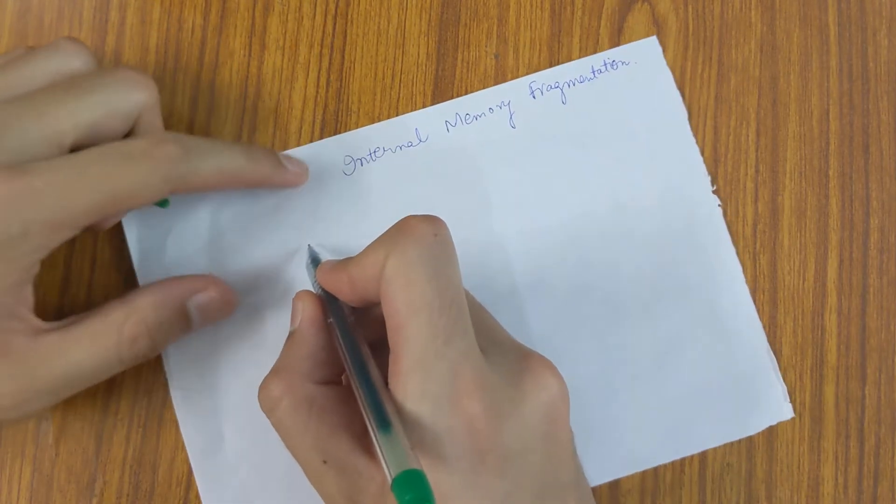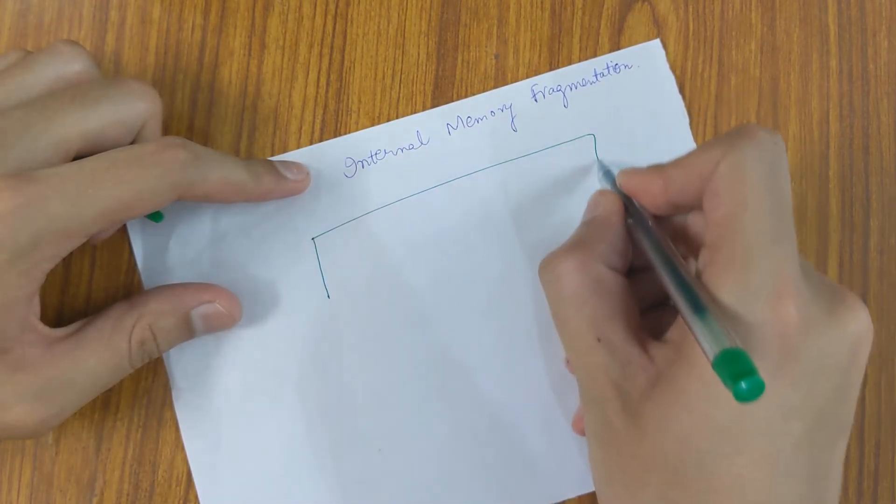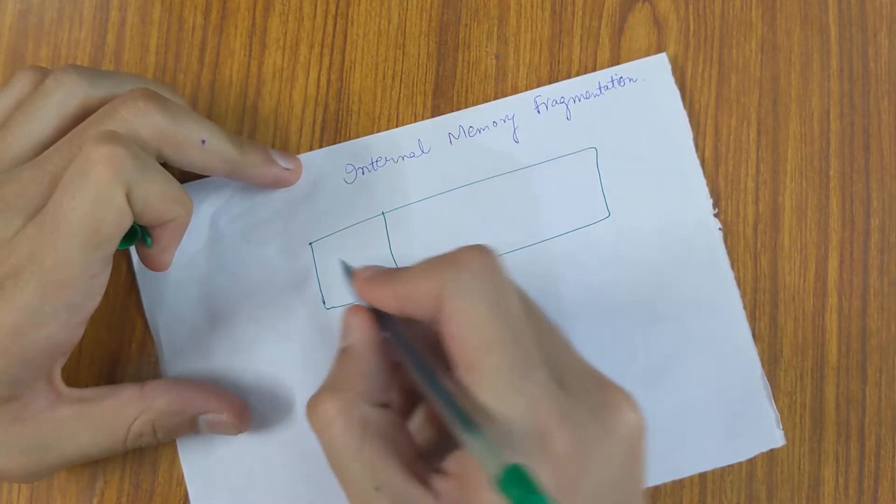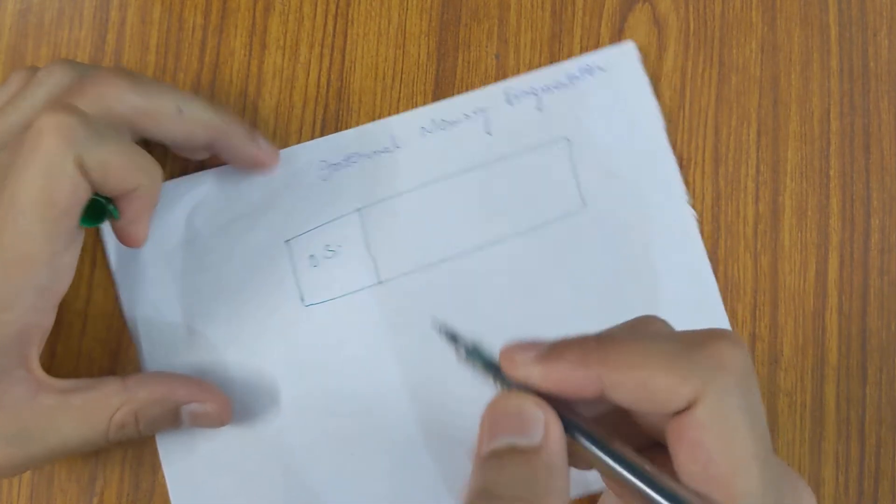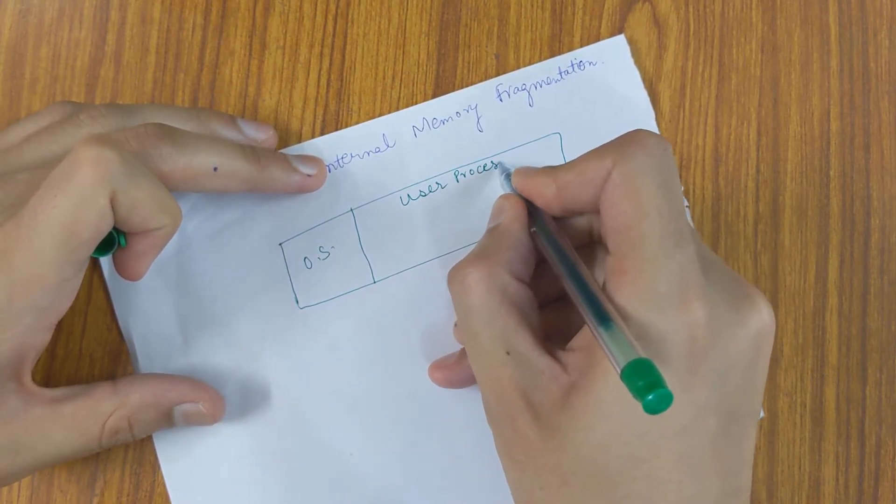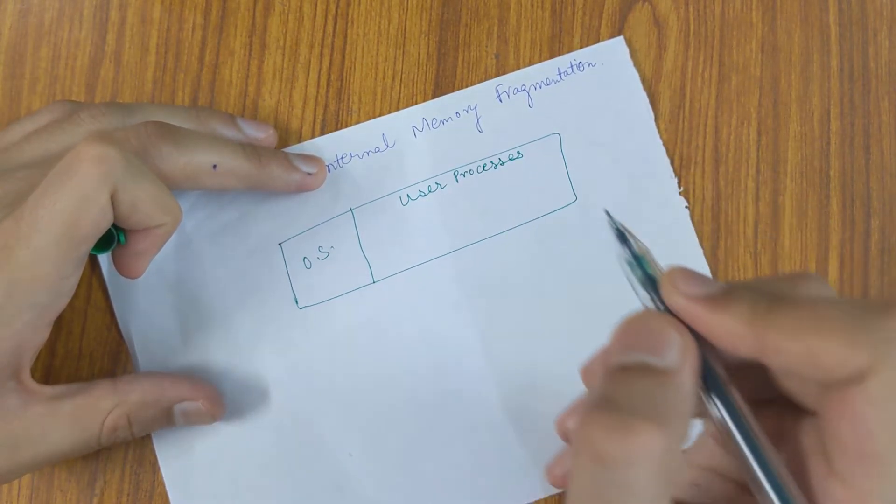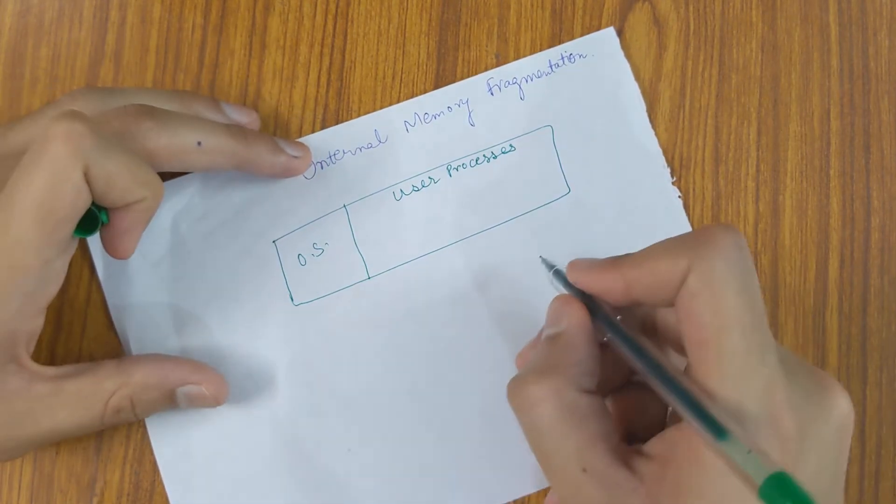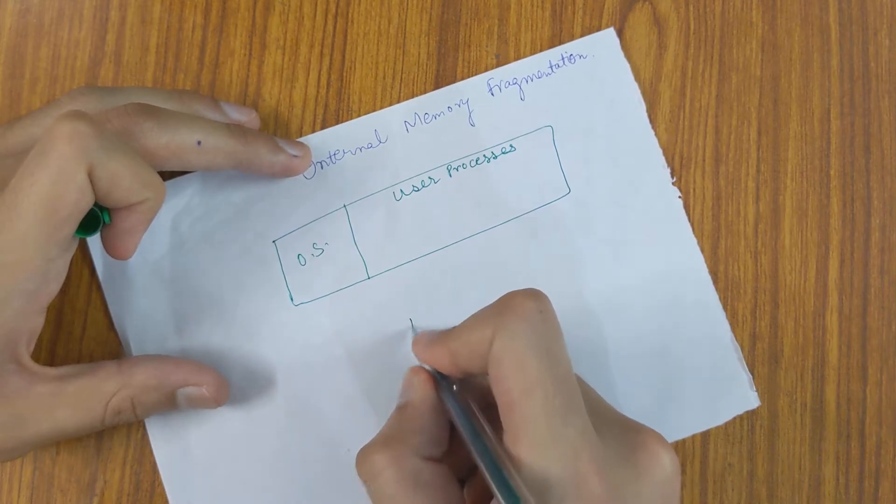So, let's say we have our memory and this much is allocated to our OS and this is for user processes. Let's say we have a process P1.